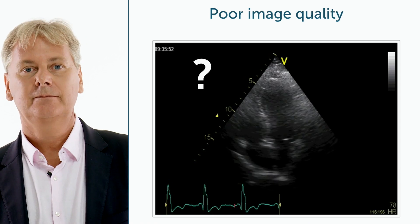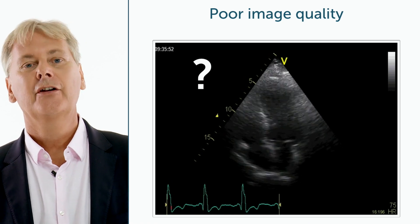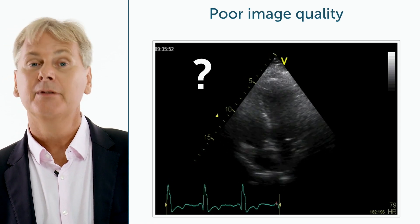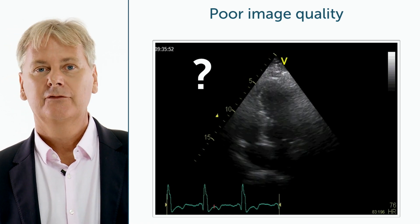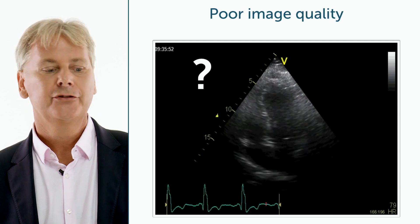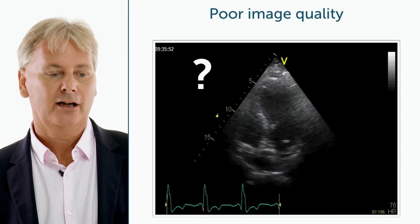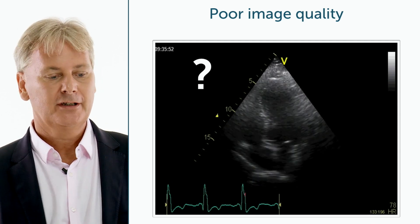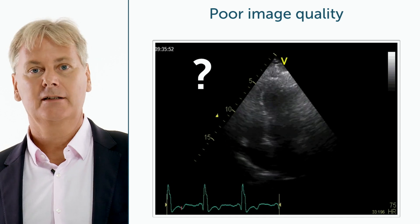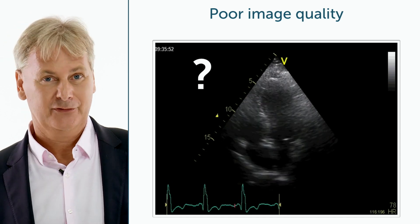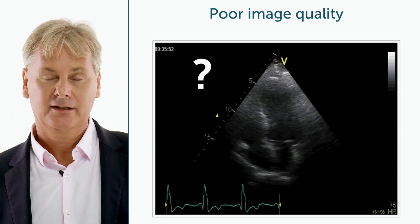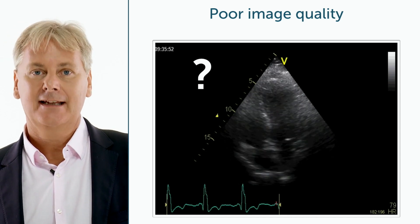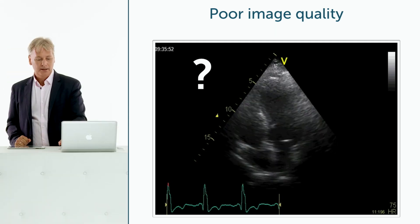Do you know this situation? It's very common. You've got a patient who's obese, and for some reason you simply cannot get a good image. Still, it's very important — the patient comes in with dyspnea, you want to know what his left ventricle function is. This is the classic indication for left heart contrast.